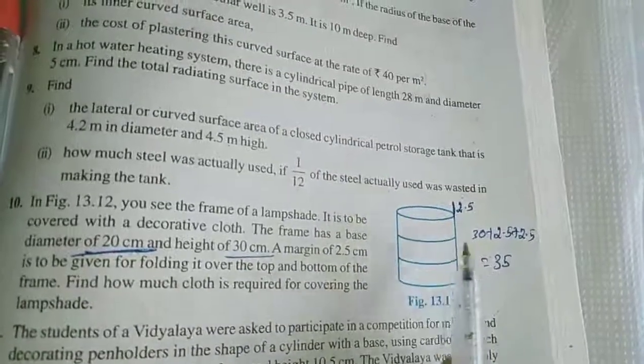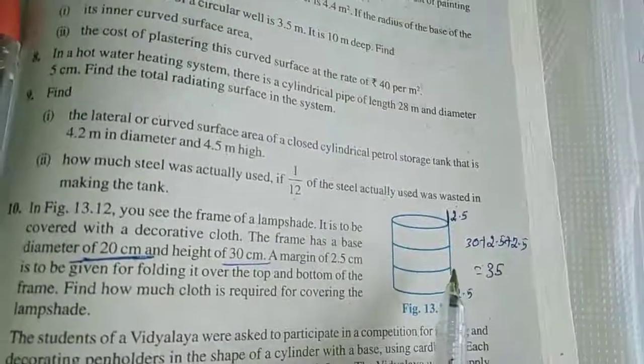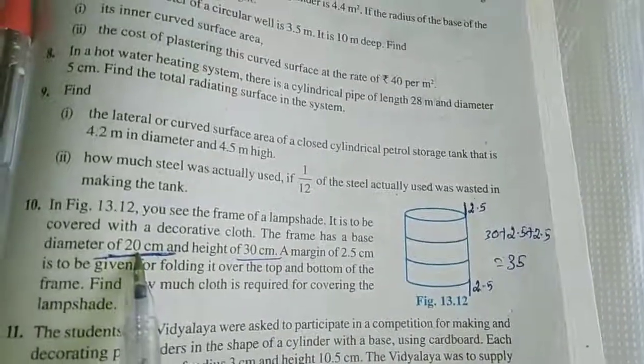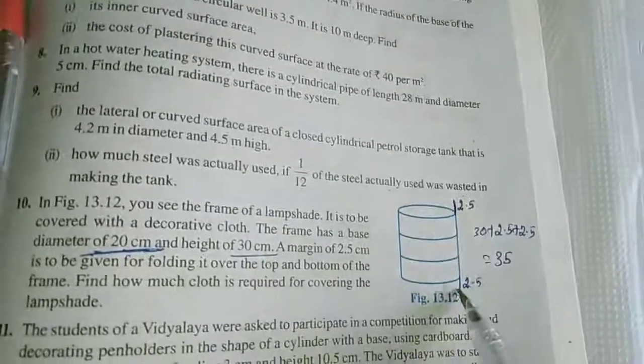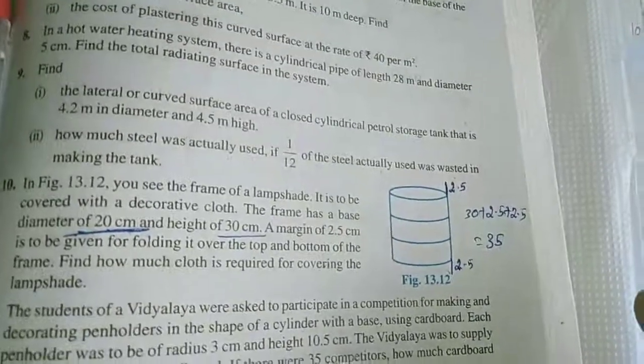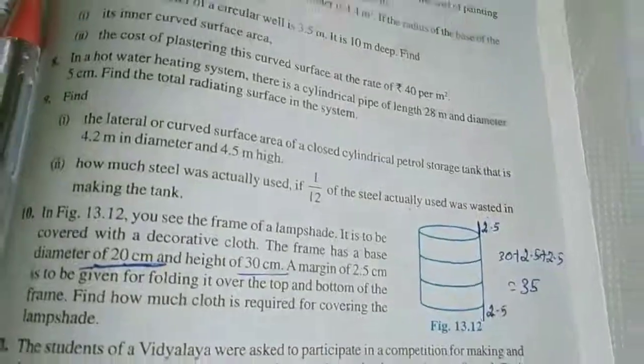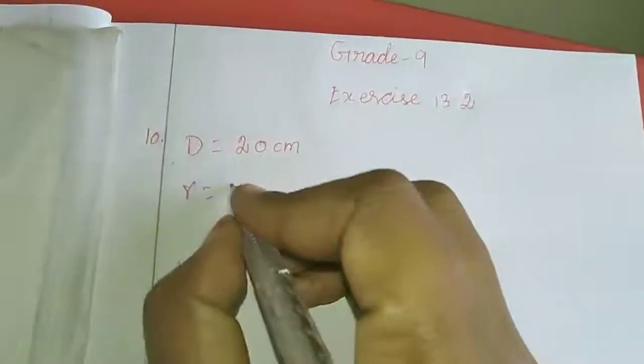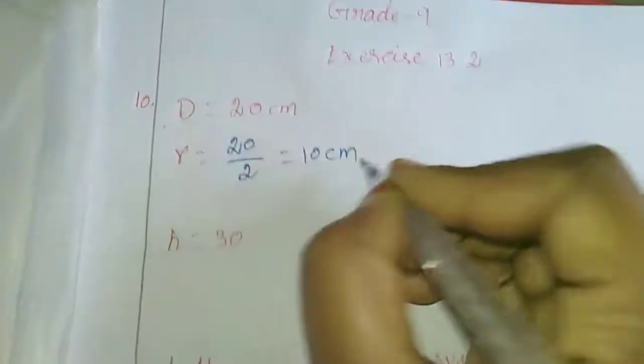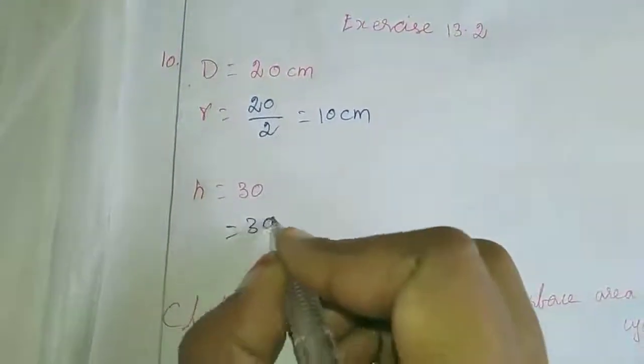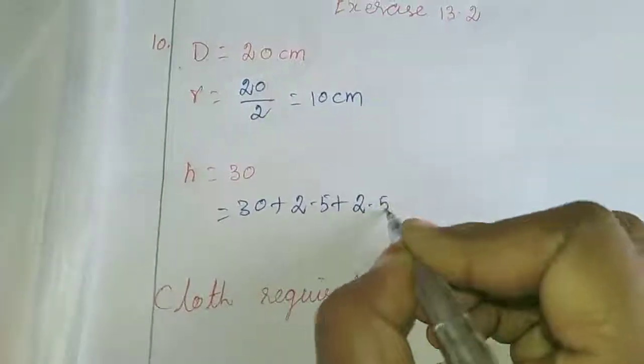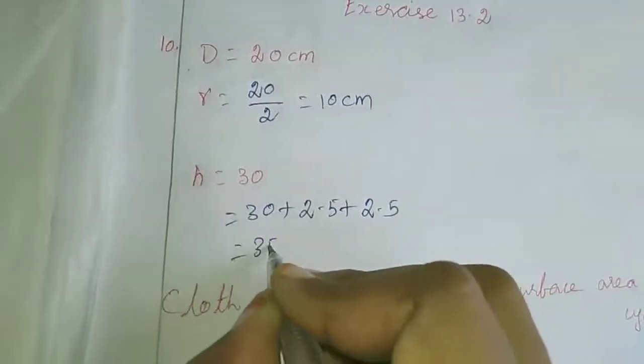Let's see, the curved surface area. Diameter is given but we need R. Diameter is 20, so R equals 20 by 2, which is 10 cm. The height is increased on both sides by 2.5 plus 2.5, so the height will be 35 cm.